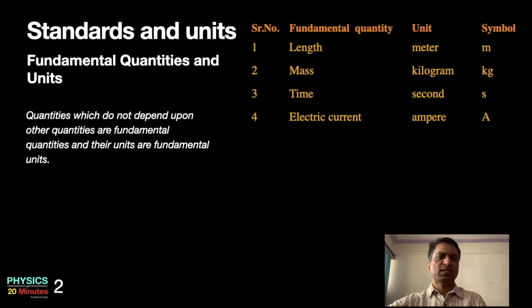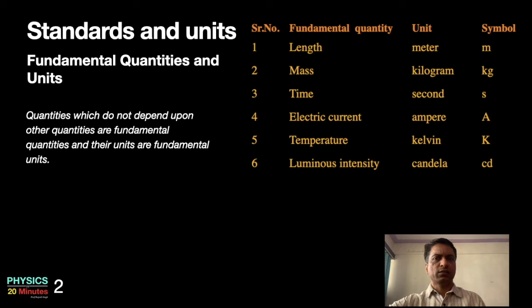Now why is it written as capital A? This unit ampere is named after a scientist. So all the units which are named after scientists, when they are written in their full form the first letter is a small letter, but when they are written in abbreviated form the first letter is a capital letter. Temperature: kelvin, capital K. Luminous intensity: candela, small cd. Amount of substance: mol, mol in the short form.